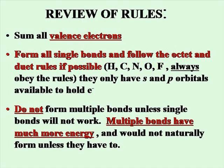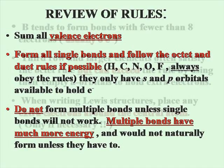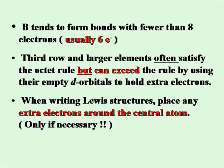Let's review the rules. Sum up all your valence electrons. Form single bonds and follow the octet and duet rules if possible. Hydrogen, carbon, nitrogen, oxygen, and fluorine always obey the rules. Do not form multiple bonds unless single bonds won't work, as multiple bonds have too much energy. Boron tends to form fewer than eight electrons around it, usually six. In more advanced molecules in the third row, you can satisfy the octet rule but can also exceed it using d orbitals. Place any extra electrons around the central atom, but only if necessary.